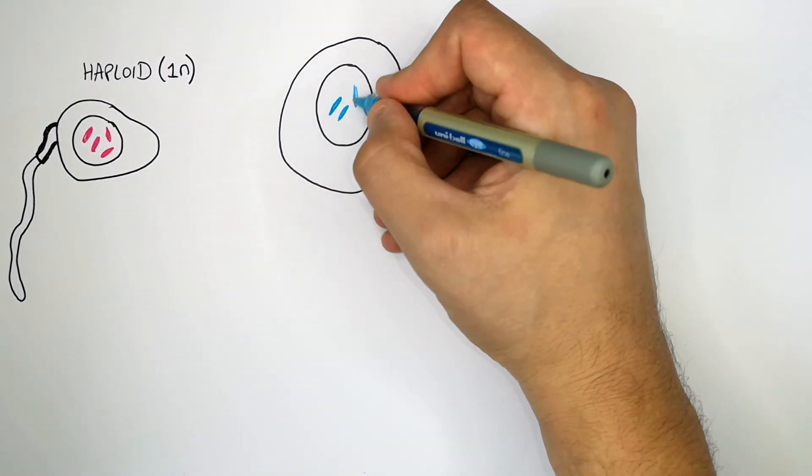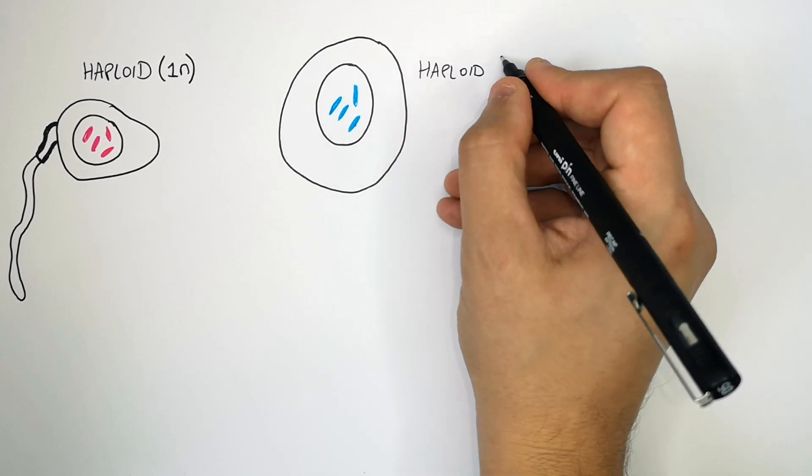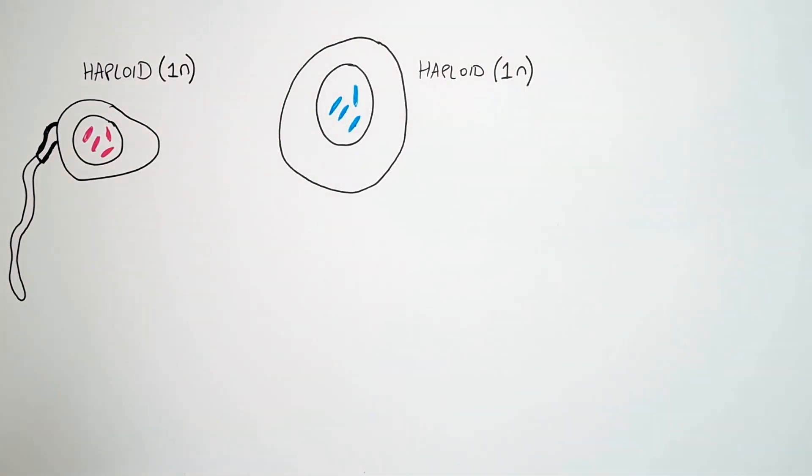This is an egg cell. It is also a haploid, which has got one set of chromosomes, 1n.